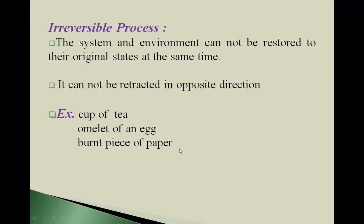Second example, omelette of an egg. If we prepare omelette of an egg, we can't reverse this process. We can't get egg from this omelette. Once we have prepared omelette from that egg, it will be final. We can't reverse that process from omelette to egg.